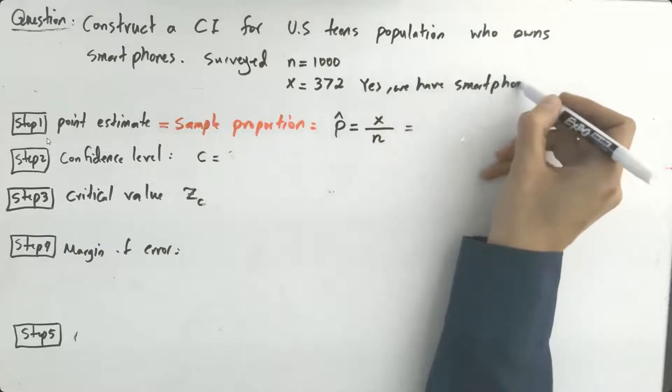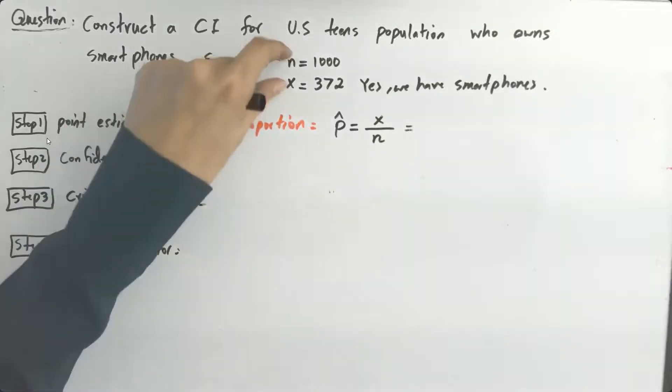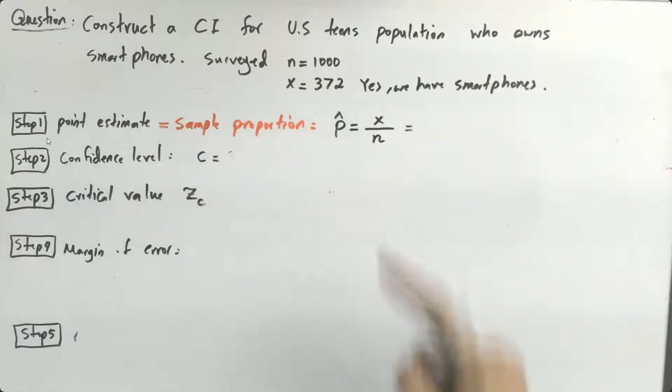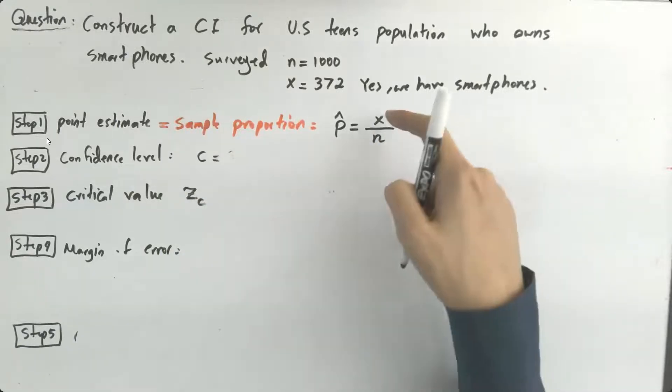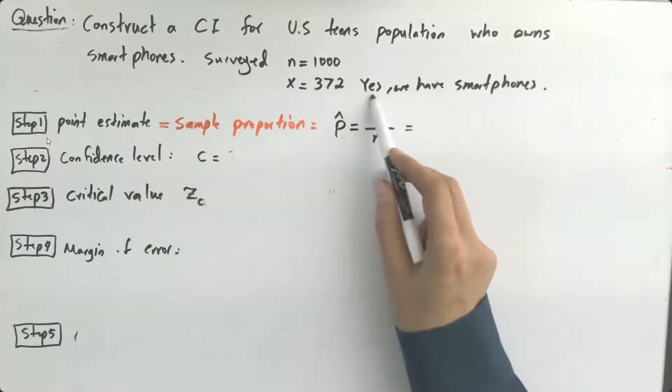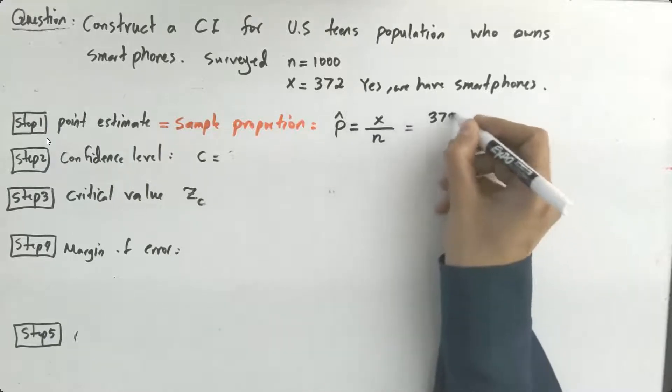smart phones. So it helped us to actually build the point estimate. p hat is defined as x over n, the number of successes which is the number of people who said yes, x divided by n, 372 over a